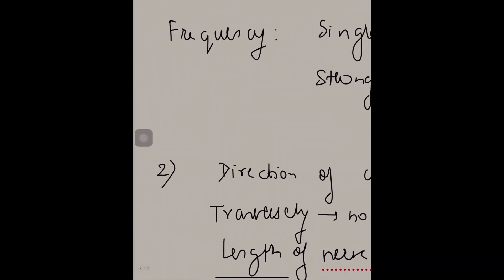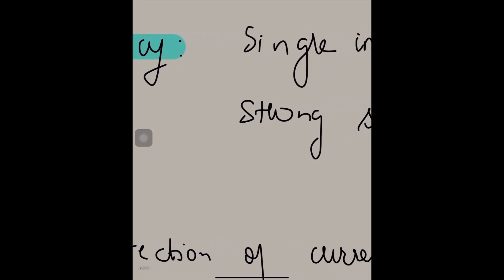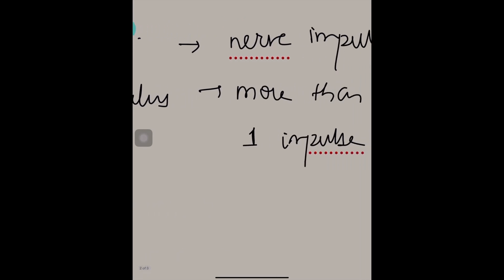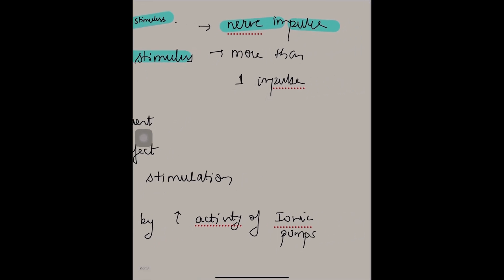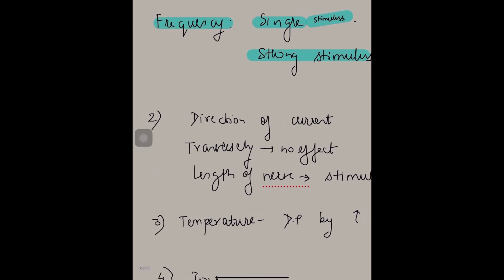Now let us go to frequency. A single stimulus will cause a single nerve impulse, but a strong stimulus will cause more than one impulse. So that is what you have to write in stimulus frequency.